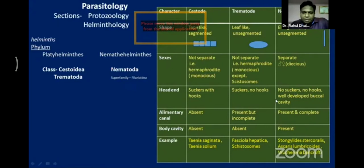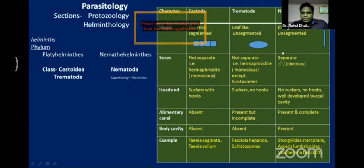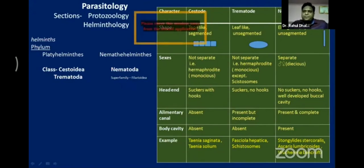Head end features: cestodes have suckers with no hooks; trematodes have suckers with hooks — wait, suckers with no hooks in trematodes; nematodes have no suckers or hooks but have a well-developed buccal cavity. Alimentary canal: absent in cestodes, present but incomplete in trematodes, present and complete in nematodes. Body cavity: absent in cestodes and trematodes, but present in nematodes where all organs float. Examples — cestodes: Taenia saginata, Taenia solium; trematodes: liver fluke Fasciola hepatica; nematodes: Strongyloides stercoralis, Ascaris lumbricoides (hookworm), and Wuchereria bancrofti causing elephantiasis.